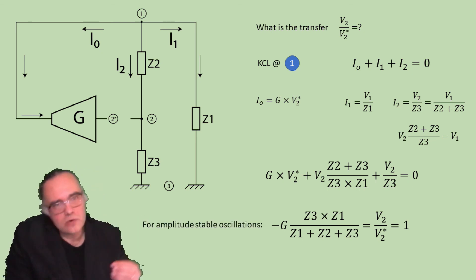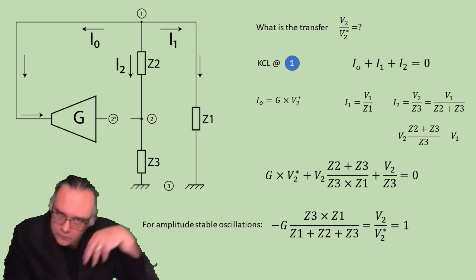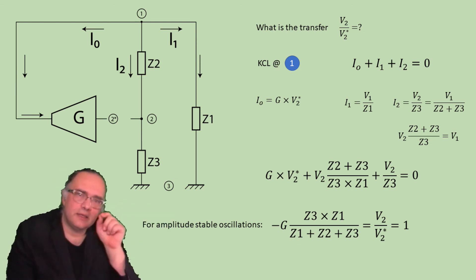In other words what goes in the loop goes through the loop and arrives at the same point exactly in the same amplitude exactly in the same phase. These are the Barkhausen criteria for oscillation. Keep in mind that Z1, Z2, Z3 are complex components, reactive components in the most generic form R plus jX.